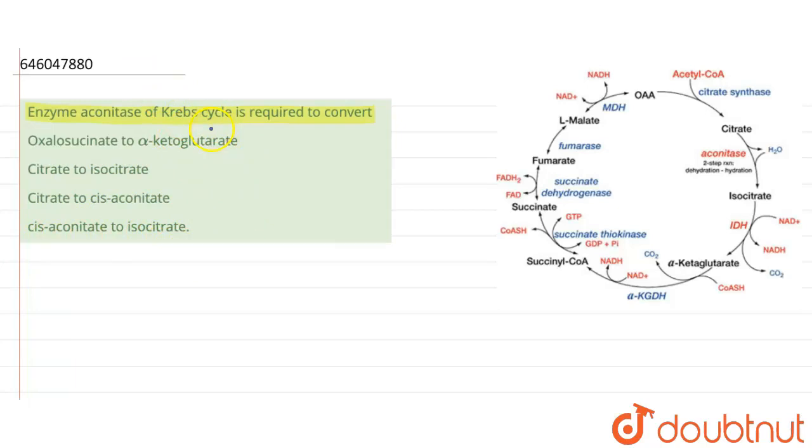So in Krebs cycle, the reaction starts when the acetyl coenzyme A binds with the oxaloacetic acid to form citrate. So here oxaloacetic acid, the acetyl coenzyme A binds to it and in the presence of the enzyme citrate synthase, it forms citrate.